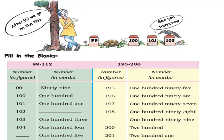Now fill in the blanks from number 99 to 112 — writing the number name (number in words). Numbers: 99, 100, 101, 102, 103, 104, 105.